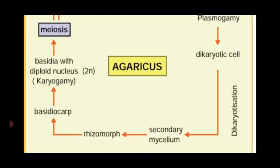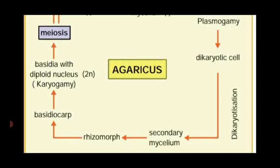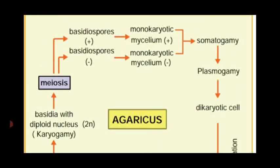This mycelium produces at the base a root-like structure called rhizomorph, which is subterranean in nature. This rhizomorph produces the basidiocarp — that is tertiary mycelium known as the fruiting body. This basidiocarp with a diploid nucleus undergoes meiotic cell division, which produces four haploid basidiospores. Out of these four, two are plus strain and two are minus strain. Both strains fall on a suitable substratum and develop into a new Agaricus hyphae with plus strain and minus strain.